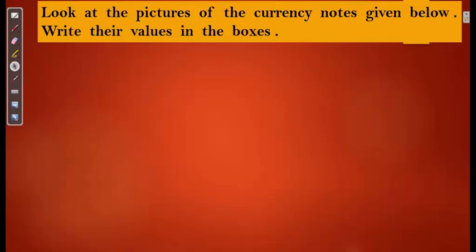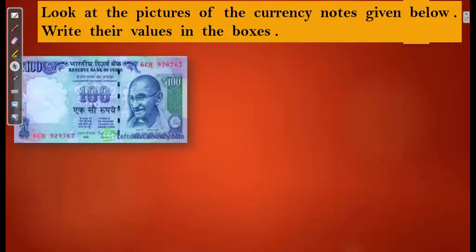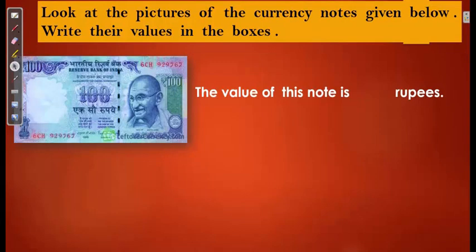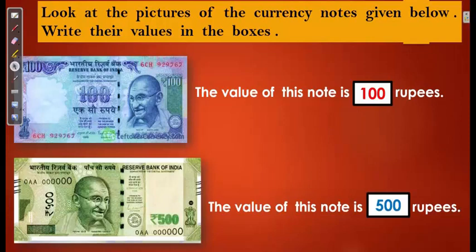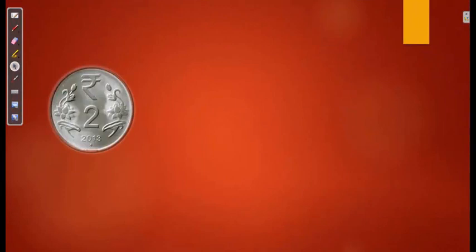As we have seen some examples, let us solve an activity. Look at the pictures of the currency notes given below and write their values in the boxes. The first one is a 100 Rupees note — the value of this note is 100 Rupees. Next, we have a 500 Rupees note — its value is 500 Rupees. Here we have a 2 Rupee coin — the value of this coin is 2 Rupees.